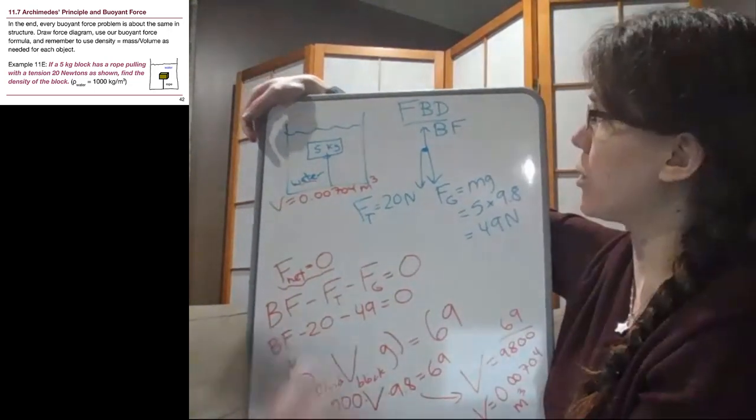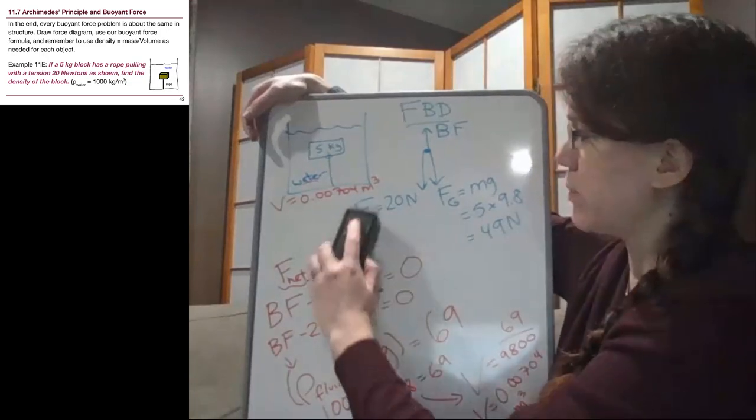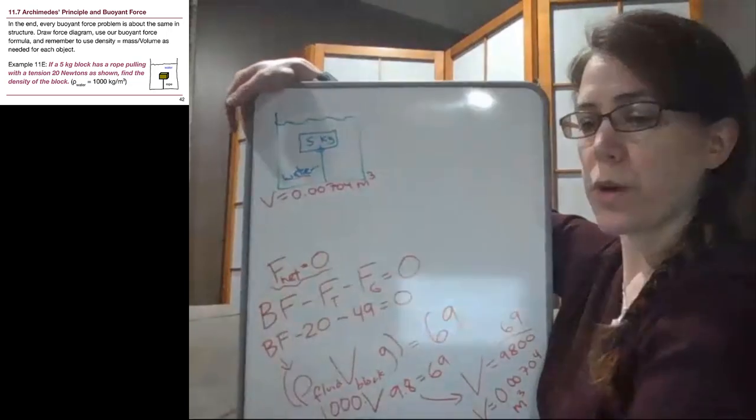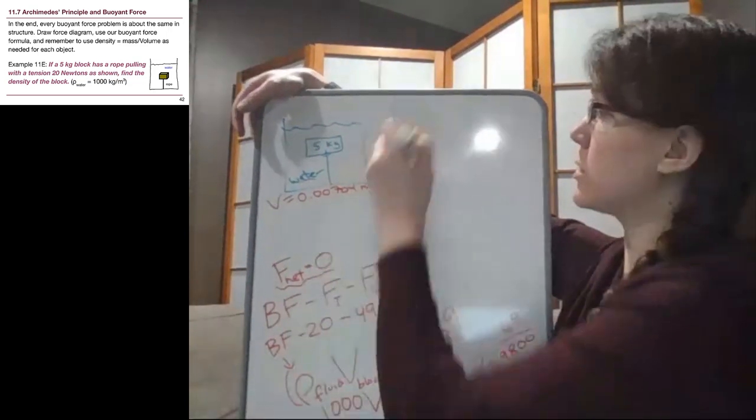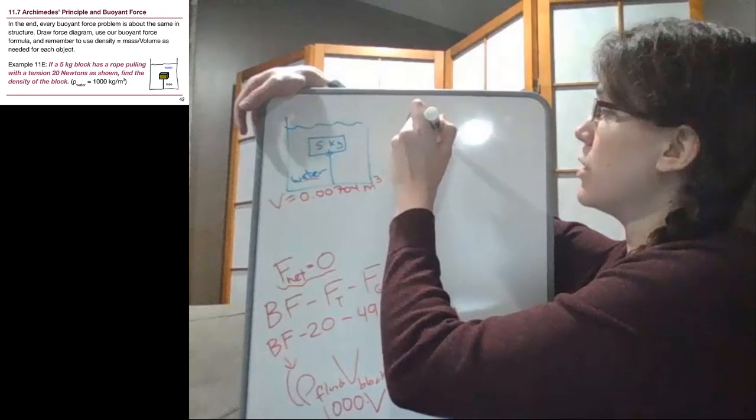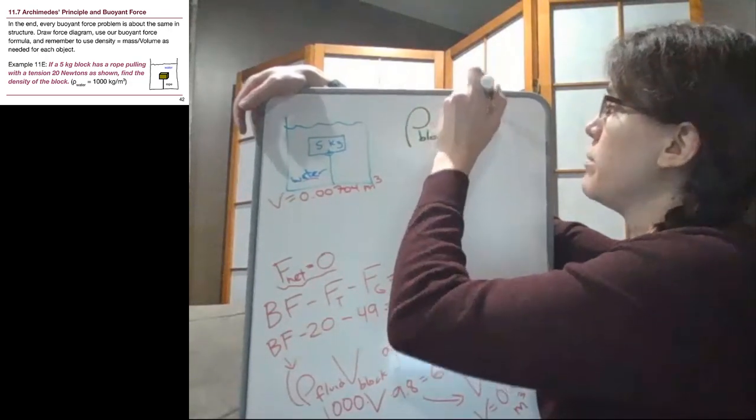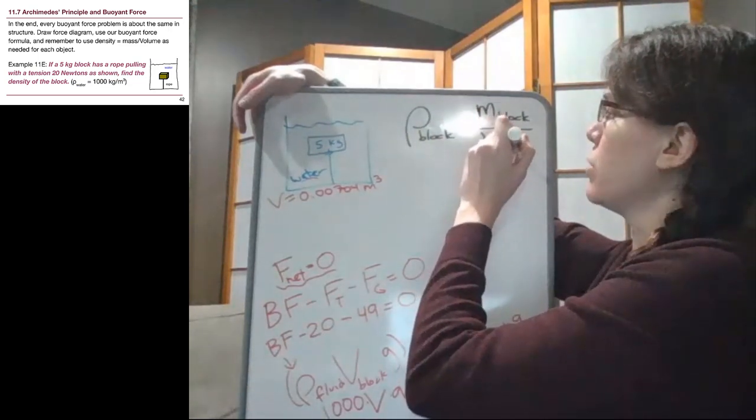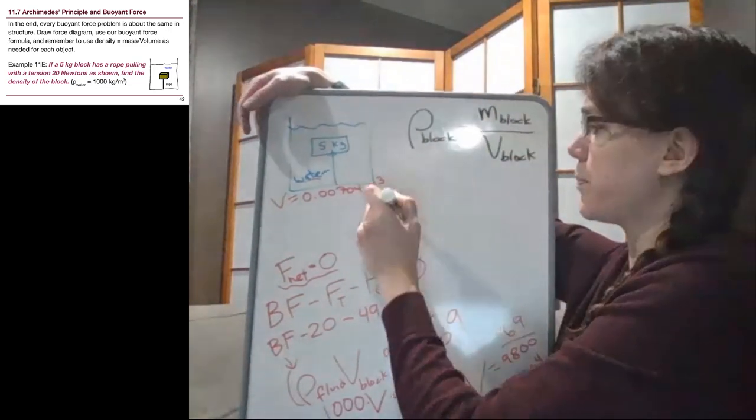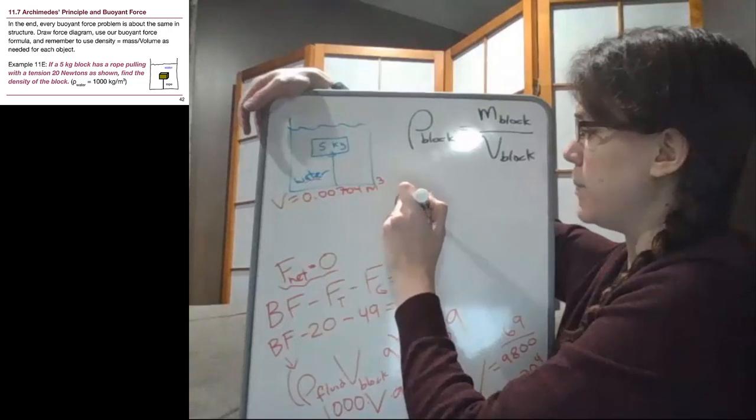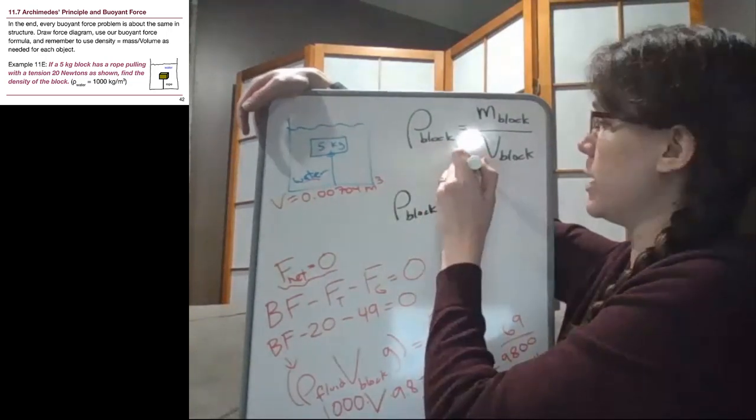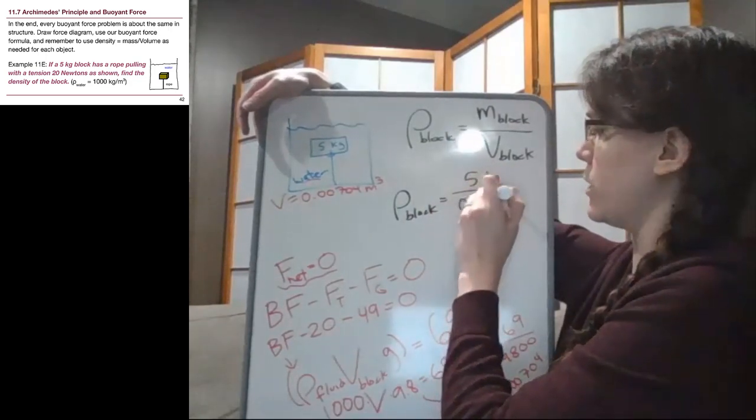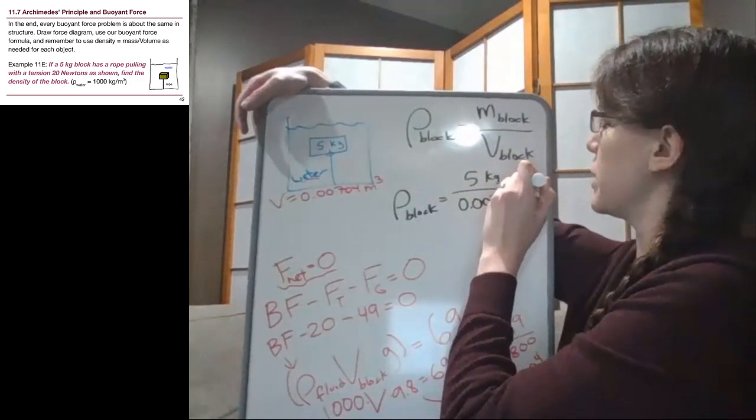So I'm going to erase this top corner, the free body diagram. We've already put that information down here below. And we're going to add that last piece of understanding that the density of the block, which is unknown to us, is the mass of the block, which was given at the start, over the volume of the block, which we just solved for. And so that density is the 5 kilograms that we started with divided by the 0.00704 cubic meters.